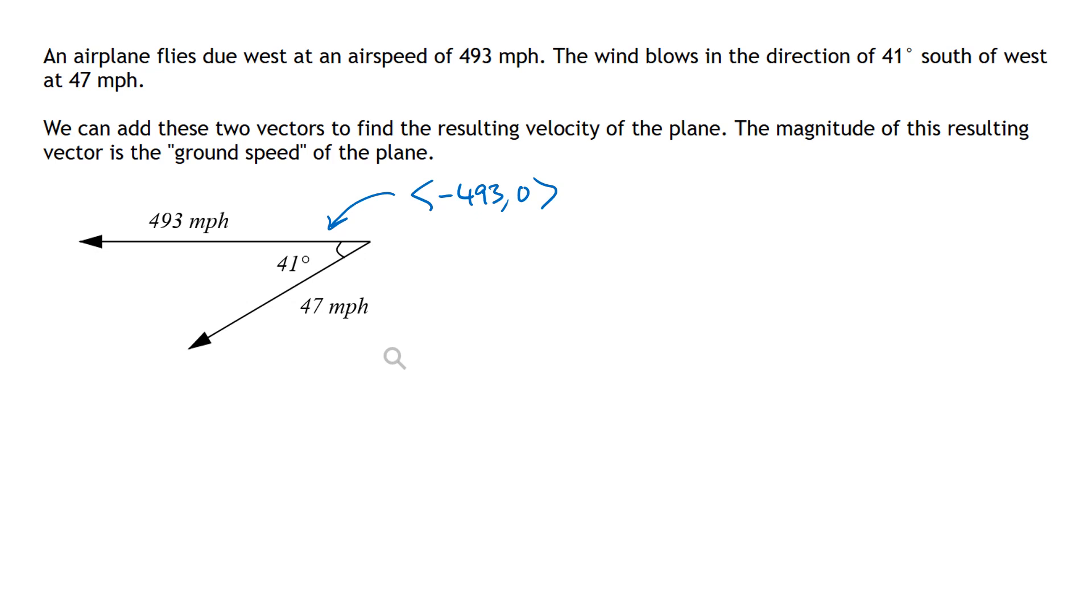What about the other vector? Well, that one's pointing southwest at this angle of 41 degrees, 41 degrees south of west. So to figure that vector out, we're going to draw a triangle. In this triangle, I'm going to draw it sort of roughly approximating the way the vector is oriented.